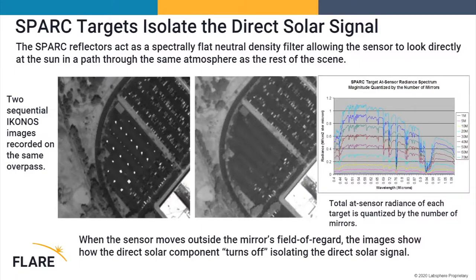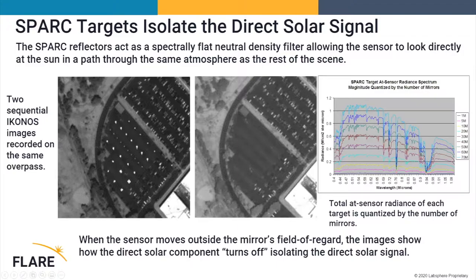I want to show what this looks like from the satellite. These images were taken with Ikonos. This is a parking lot with a number of Flare systems deployed — there are some cars, but these are Flare SPARK targets of different sizes and different numbers of mirrors. Some appear brighter because we have different numbers of mirrors. Here we're in the field of regard of the satellite; on the right, we are out of the field of regard. The mirrors have this on/off quality, which is useful — we can quickly turn them on or off, or even pulse them by shifting the mirror a degree or two out of the field of regard. This could create an AC signal or pulse them, which is an interesting aspect of SPARK technology.